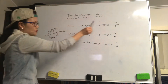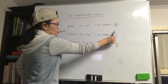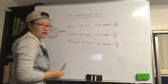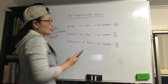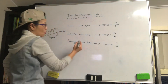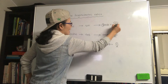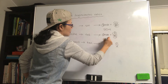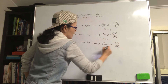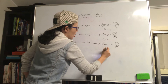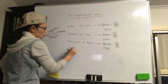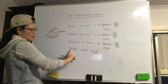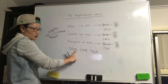Sine theta equals opposite over hypotenuse. Cosine theta equals adjacent over hypotenuse. Tangent theta equals opposite over adjacent. How do you memorize all this? We use SOH-CAH-TOA: S-O-H as SOH, C-A-H as CAH, T-O-A as TOA. So sine theta is opposite over hypotenuse, cosine is adjacent over hypotenuse, tangent is opposite over adjacent.